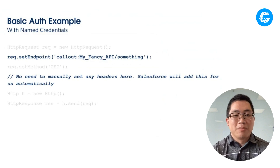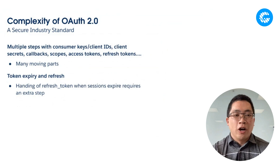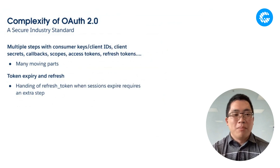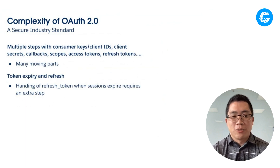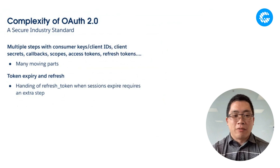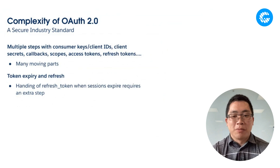What about a more complex authentication protocol? OAuth 2.0 has been around for many years and is a very secure, well-trusted industry standard for authentication. Many popular APIs, including Salesforce's own APIs, use OAuth 2.0 and its variants to allow people to access data and systems securely. But the problem with OAuth 2.0 is it's quite complicated to understand — many steps, many things you need to do to get authenticated, get the right tokens, store the tokens, and use them. There are also concerns around token expiry and refreshing expired tokens.